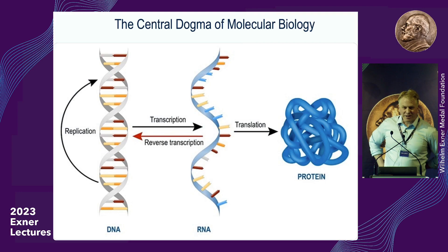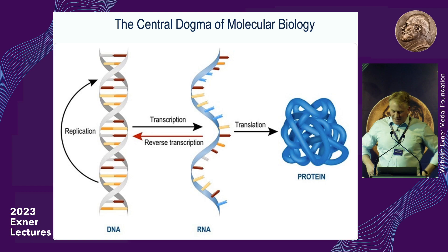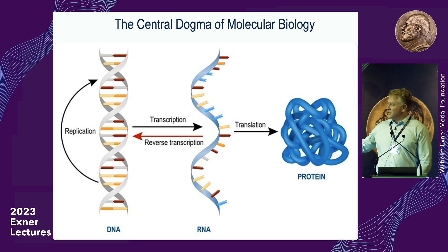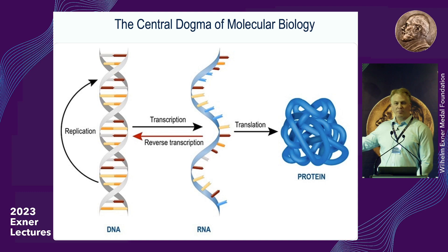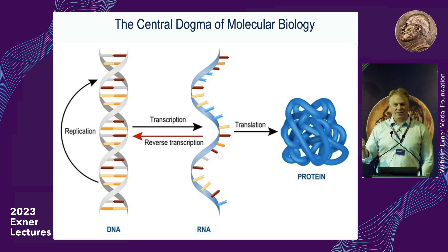I wanted to give one background slide on molecular biology. When we teach biology in the United States, there's a term called the Central Dogma of Molecular Biology — it describes the basic observation that DNA encodes all of the information in our cells. DNA is turned into messenger RNA, which is then turned into protein. Proteins are things like insulin, fibers in your muscles that help them contract, and things that help nerves grow — it's the protein that's really doing the work, with messenger RNA as the intermediate step.